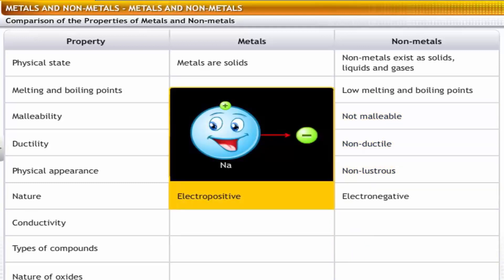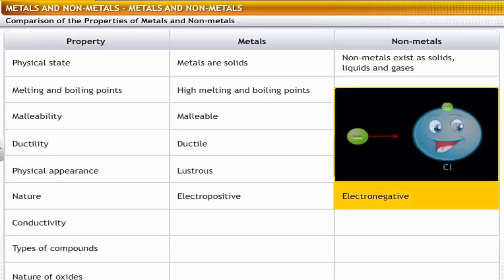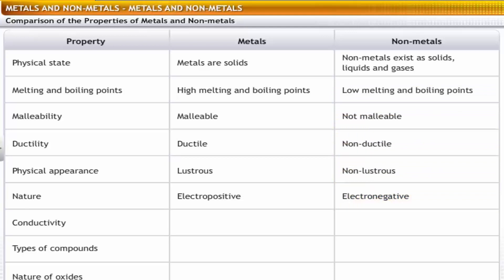Metals are electropositive; that is, they tend to lose electrons. Non-metals are electronegative, because of their tendency to accept electrons.